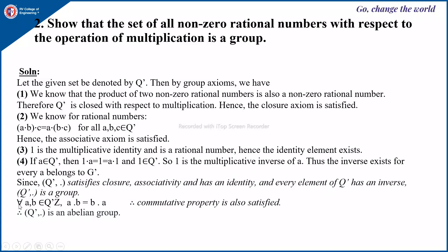In addition, for a, b belonging to Q*, a times b equals b times a since multiplication is commutative. Therefore the commutative property is also satisfied, and Q* with multiplication is an abelian group.